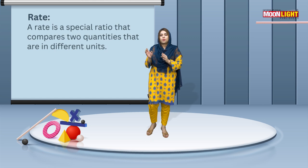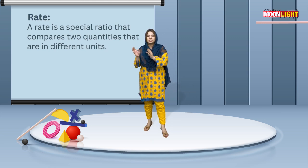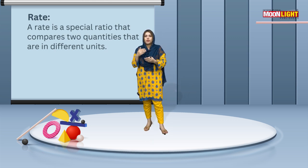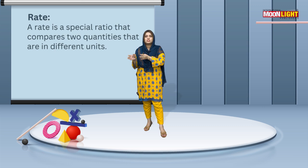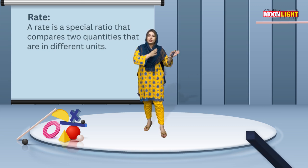For example, if you have a runner in a race, the distance will depend on time. This is an example of rate, where one quantity depends on a different quantity.